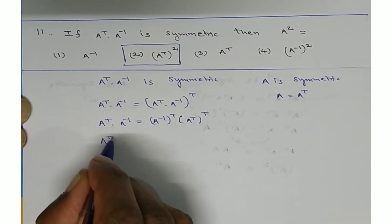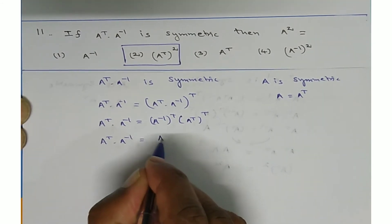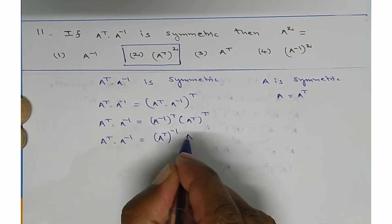A transpose into A inverse is equal to, here A inverse transpose, otherwise you can write it as A transpose inverse. A transpose of transpose is A.